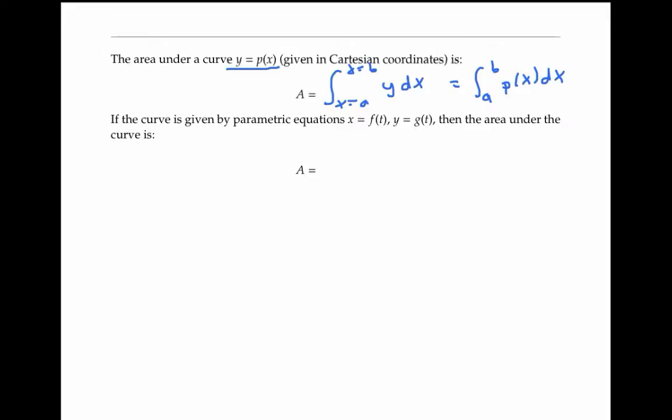If instead, the curve is given by the parametric equations x equals f of t and y equals g of t, the area is still going to be the integral of y dx. But now, y can be written as g of t, and dx is going to be f prime of t dt, using differential notation. Therefore, the area is going to be the integral of g of t, f prime of t, dt.